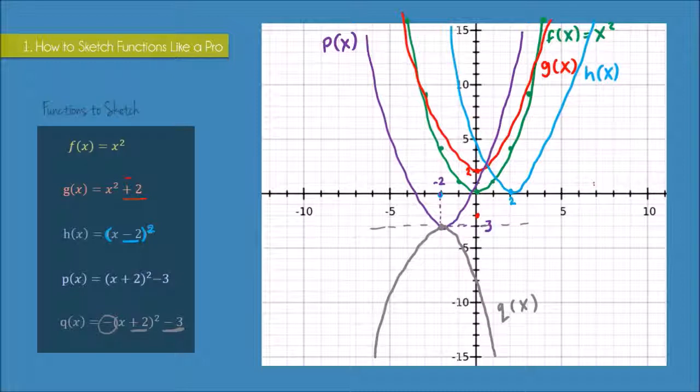So whenever you have a minus in front of the bracket or the x², you will have this n-shape.